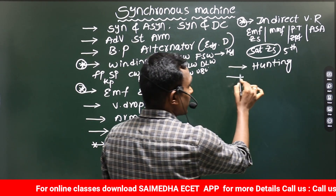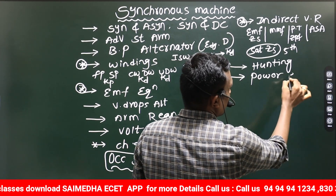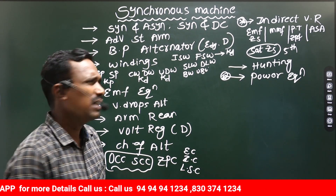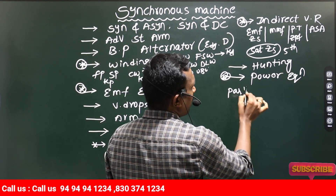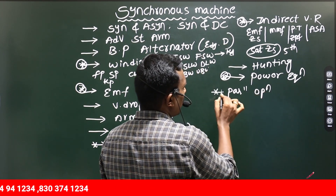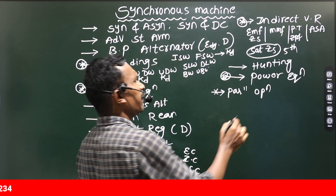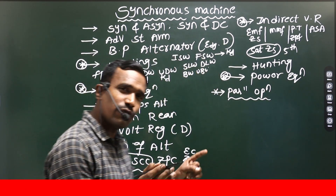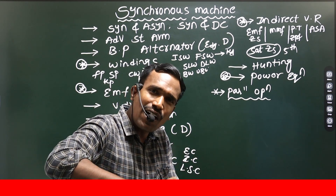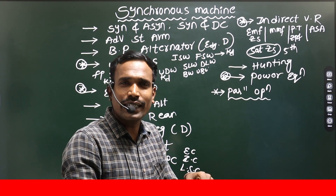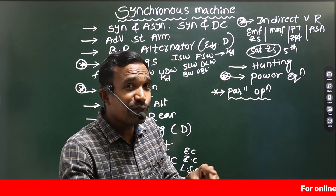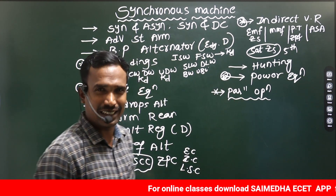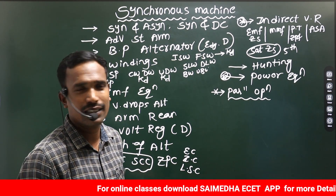After that, we need to go for power equations — very important, 100% question. Then we go for parallel operation of generators. This is a big topic with many subtopics: parallel operation of two alternators; parallel operation of alternator with bus bar; under no load condition; under loaded condition; with effect of excitation; with effect of prime mover input. There are many subtopics here.